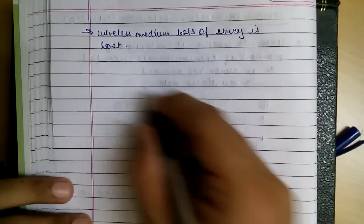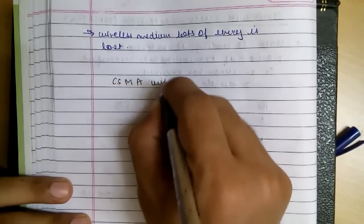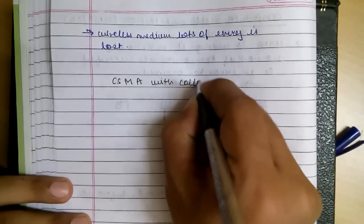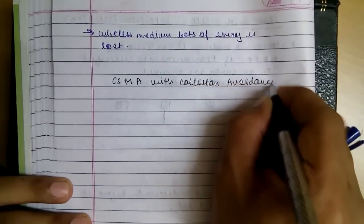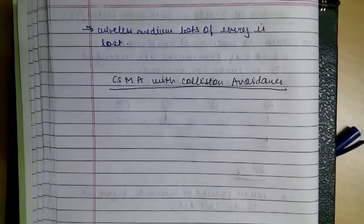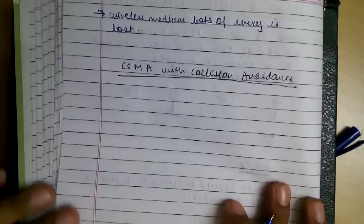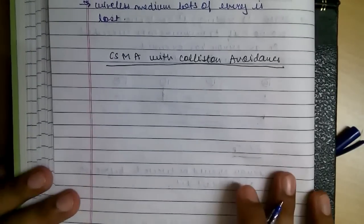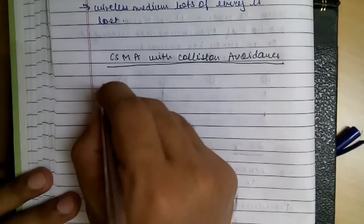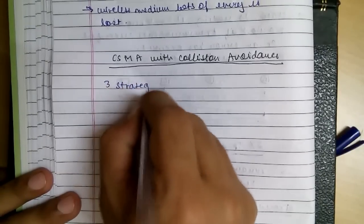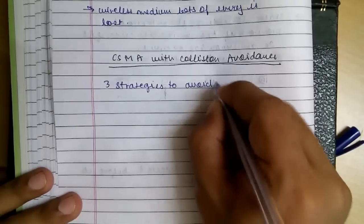To solve this, we were first detecting collision, now we will try to avoid it. CSMA with collision avoidance. What is collision avoidance? It follows three strategies to avoid the collision.